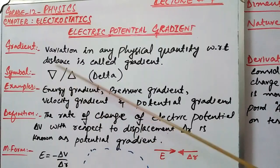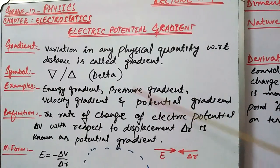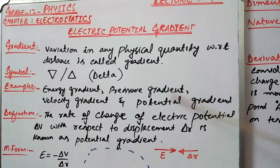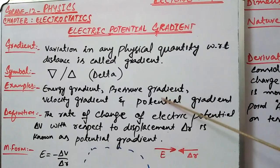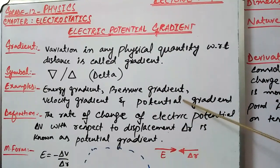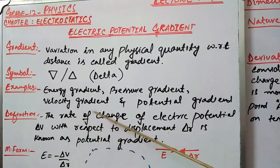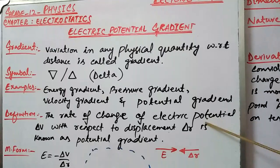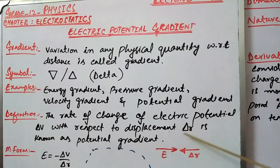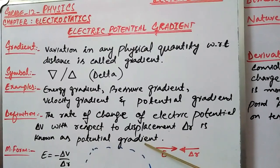Pressure gradient means variation in pressure with respect to distance. Similarly, electric potential gradient is defined as the rate of change of electric potential ΔV with respect to displacement Δr, and this is known as potential gradient.